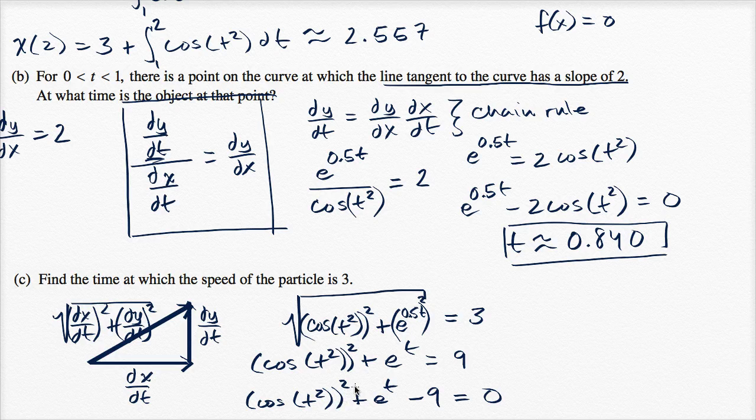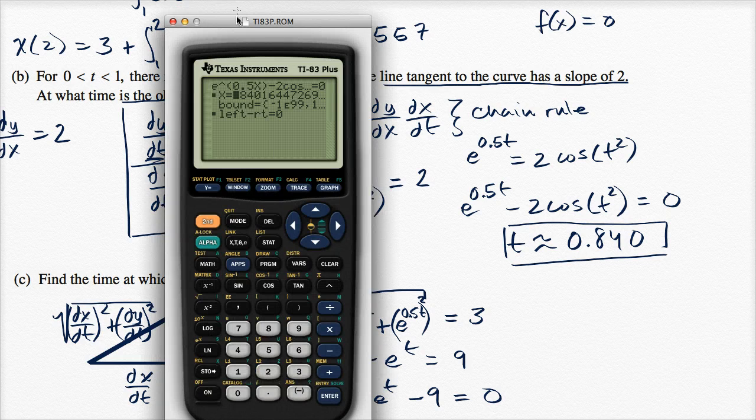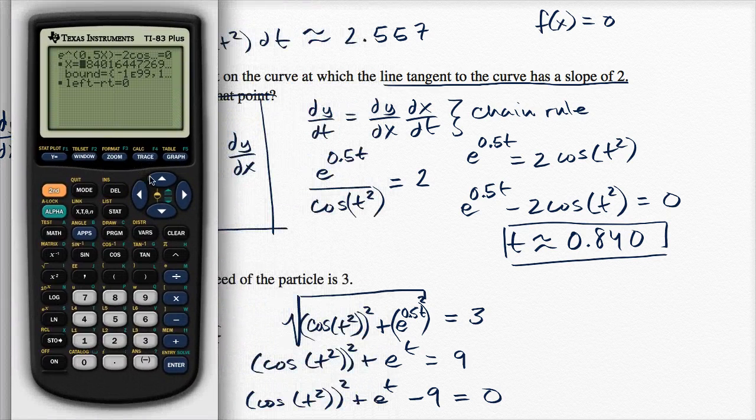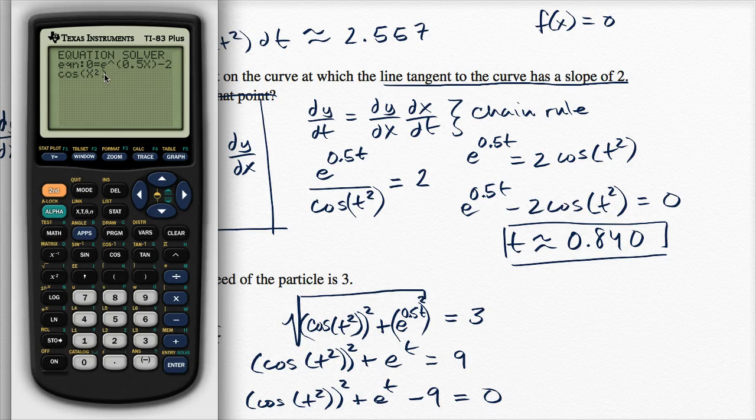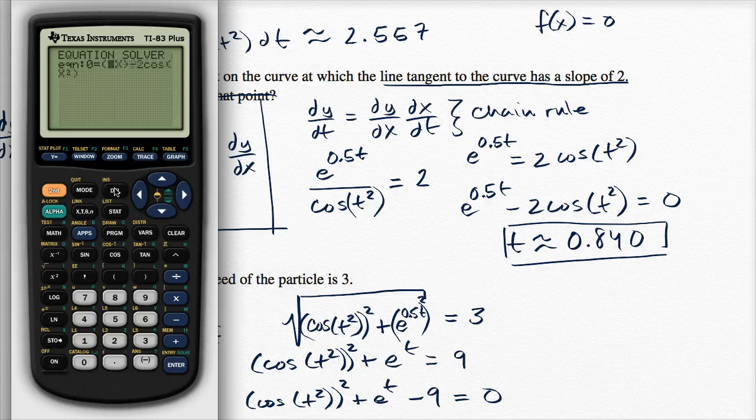And now, once again, in this part of the AP exam, we can use our calculators. So let's use our calculators to solve for, in this case, T, but I'll do everything in terms of X. So the equation, zero is equal to, let me just delete all of this actually, just to get it out of the way.